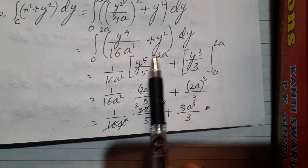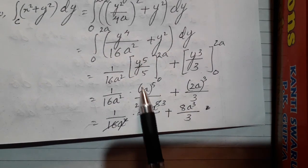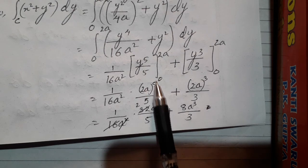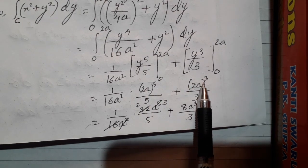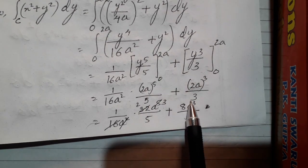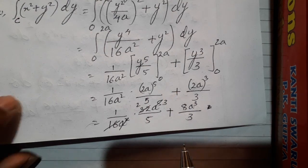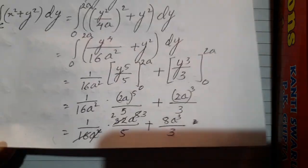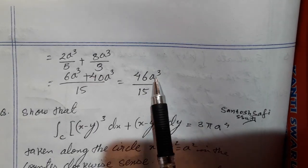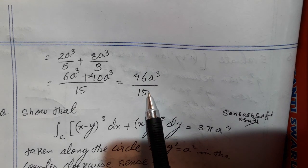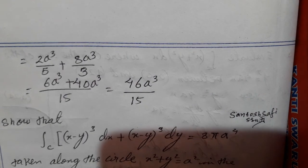Putting the upper limit, we get 2a to the power 5 by 5, plus 2a to the power 3 by 3. Simplifying this, we get 46a cubed by 15. Thank you.